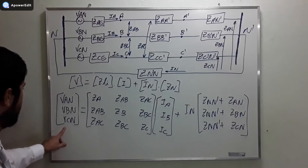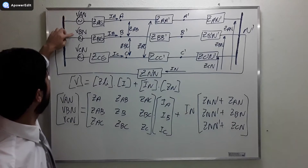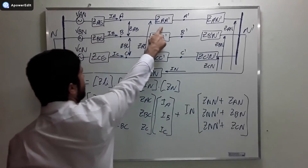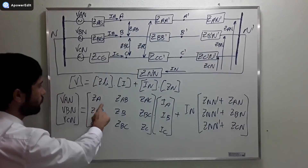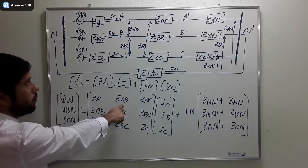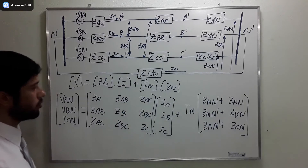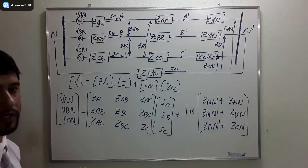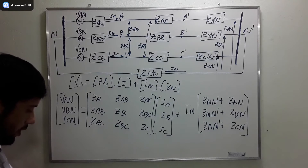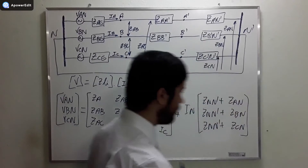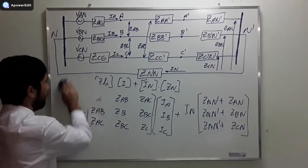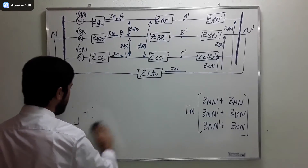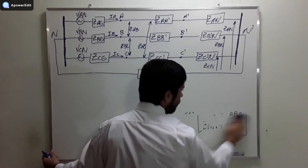To summarize: the voltages Van, Vbn, Vcn correspond to Za which equals Zag + Zaa' + Za'n', Zab which is the mutual coupling between line A and line B, and Zac the mutual coupling between line A and line C. Try to derive this yourself and you will find the same result. Now that we have this, we can create the matrix that will enable us to calculate the line currents — that is our objective.